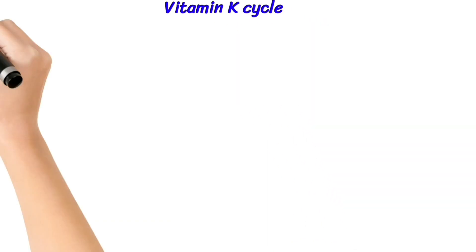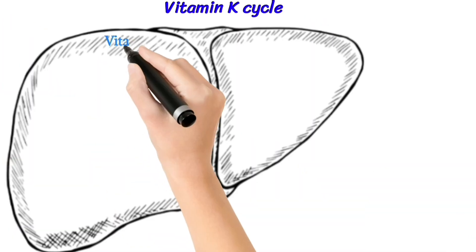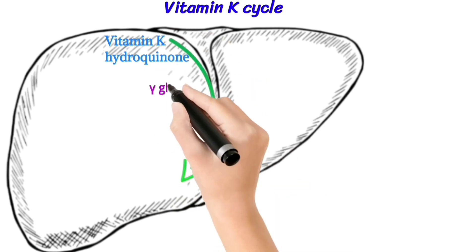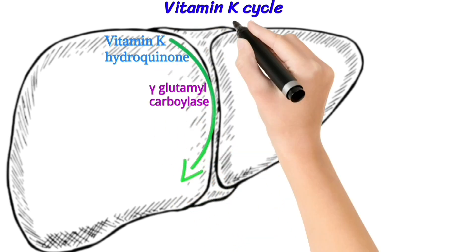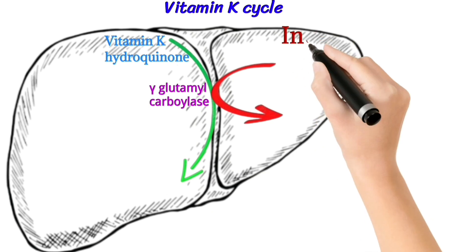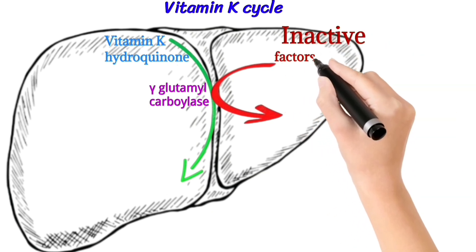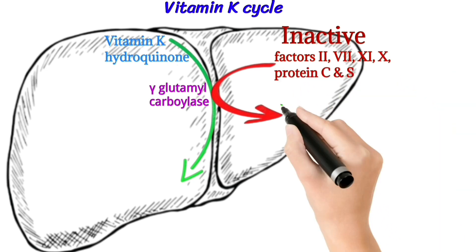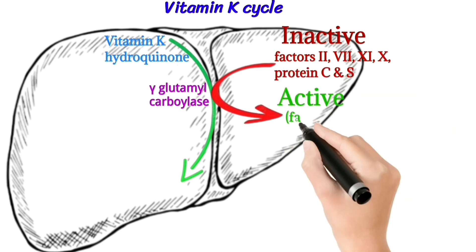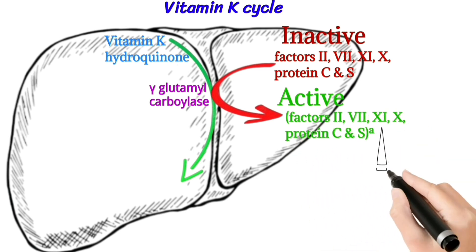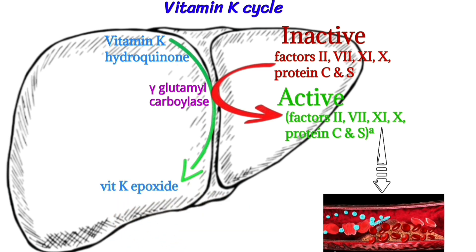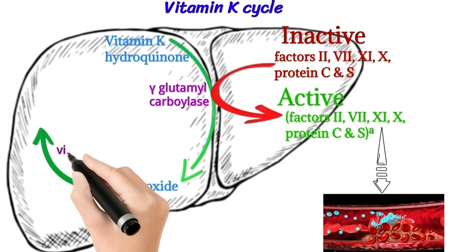What is the cycle? This cycle acts on liver vitamin K hydroquinone with the help of gamma-glutamyl carboxylase. This enzyme converts inactive form to active form — inactive form factors 2, 7, 9, 10 and protein C and S — converting them to their active form, which then goes to blood. This enzyme converts vitamin K hydroquinone into vitamin K epoxide.